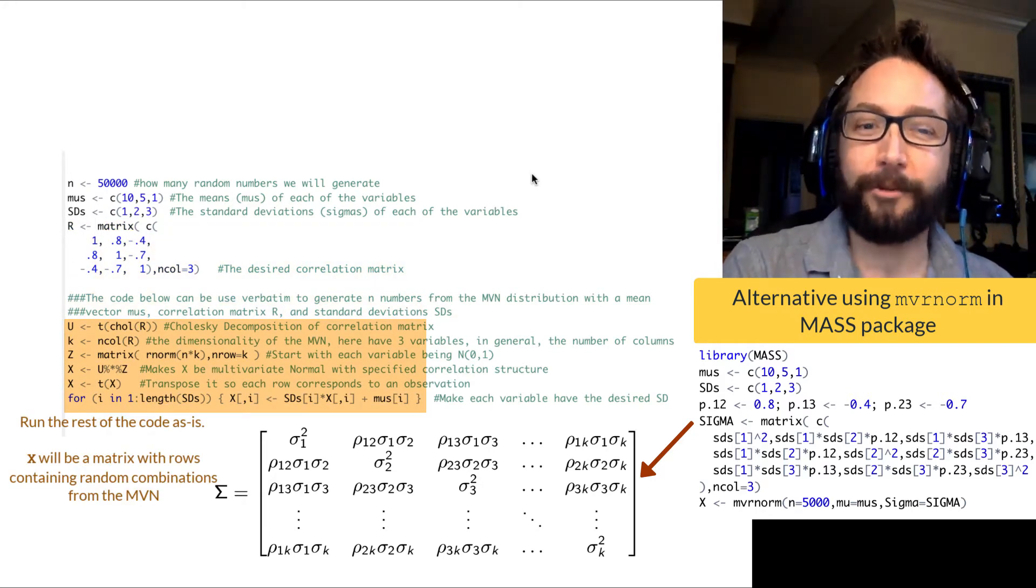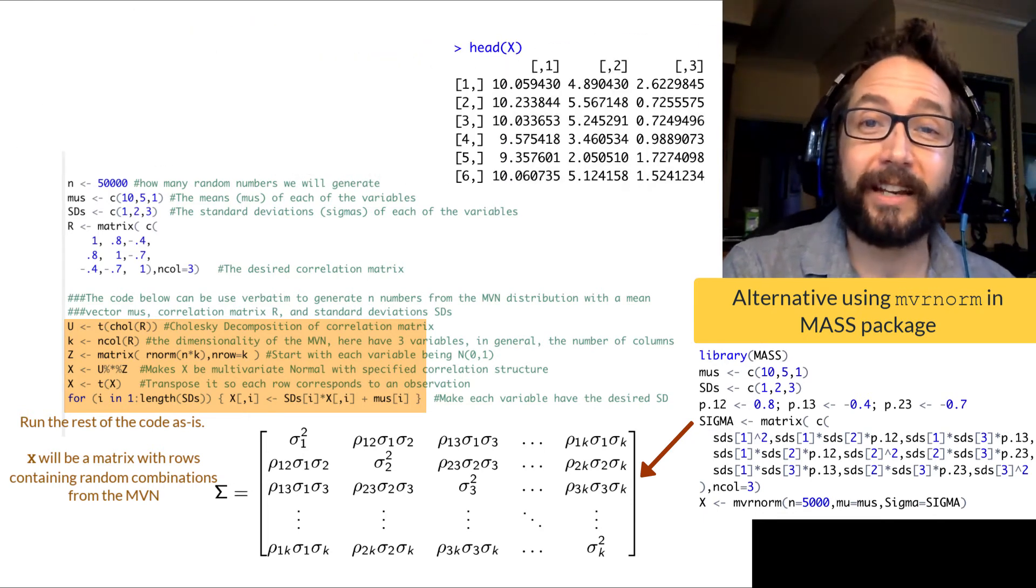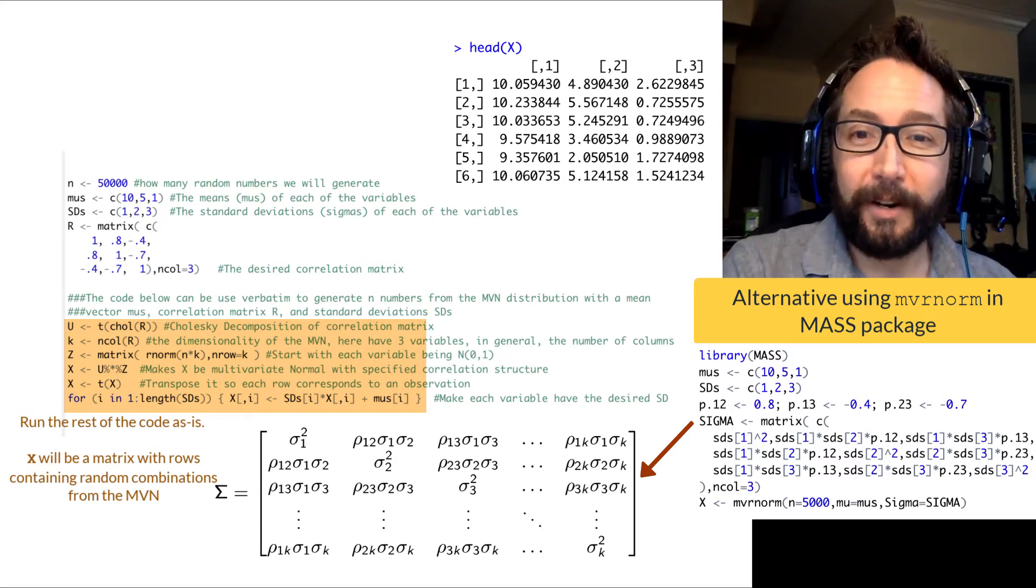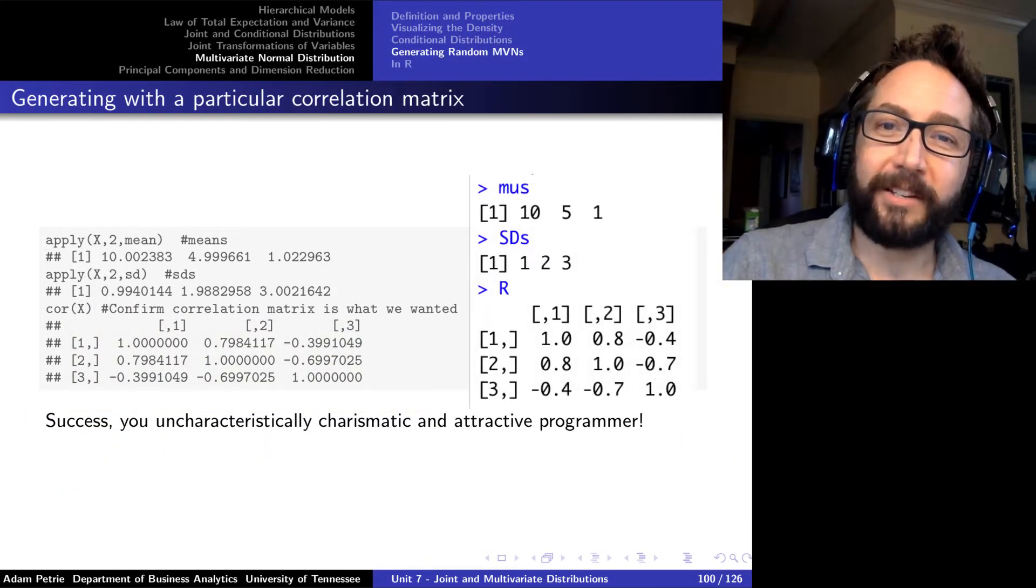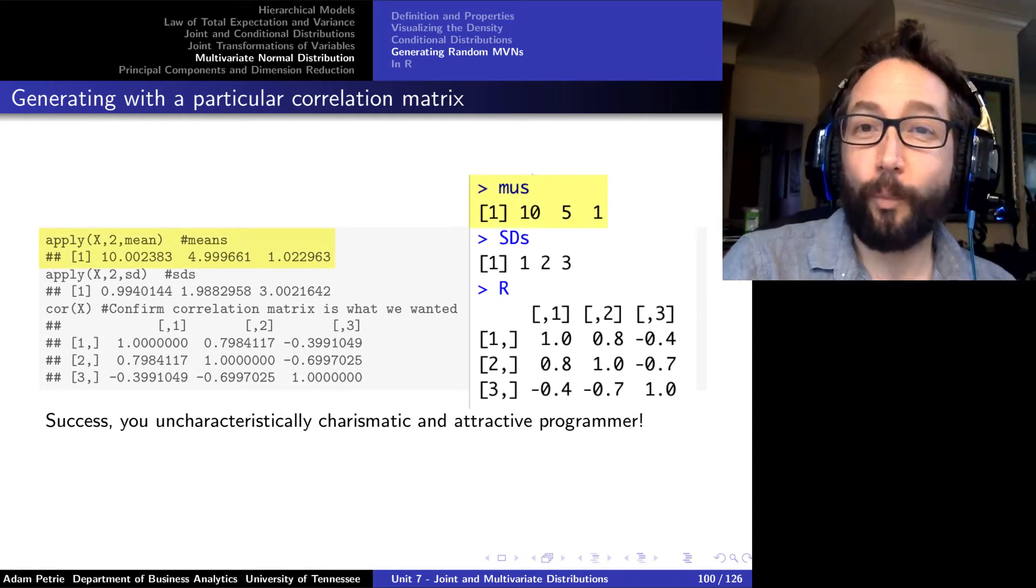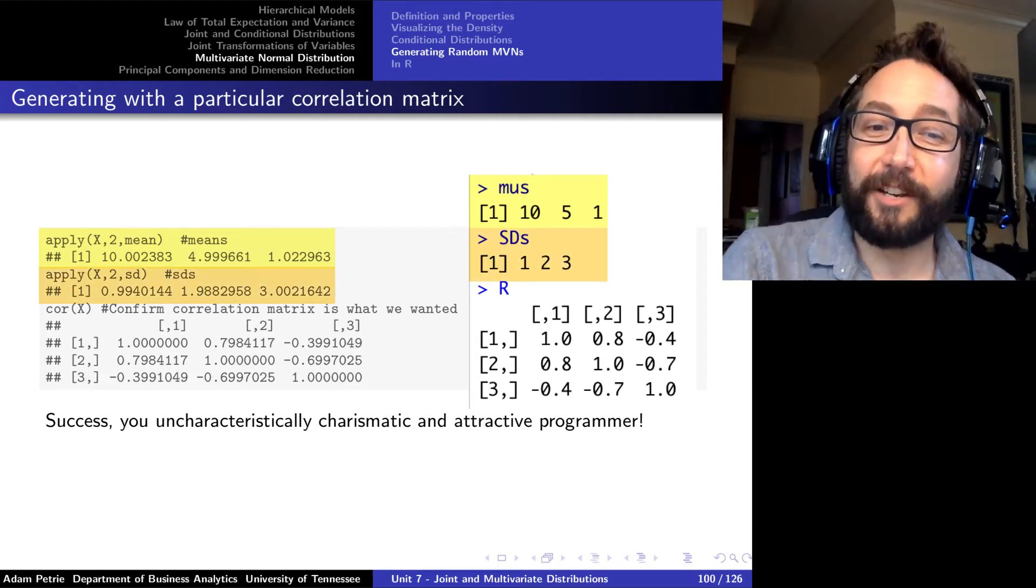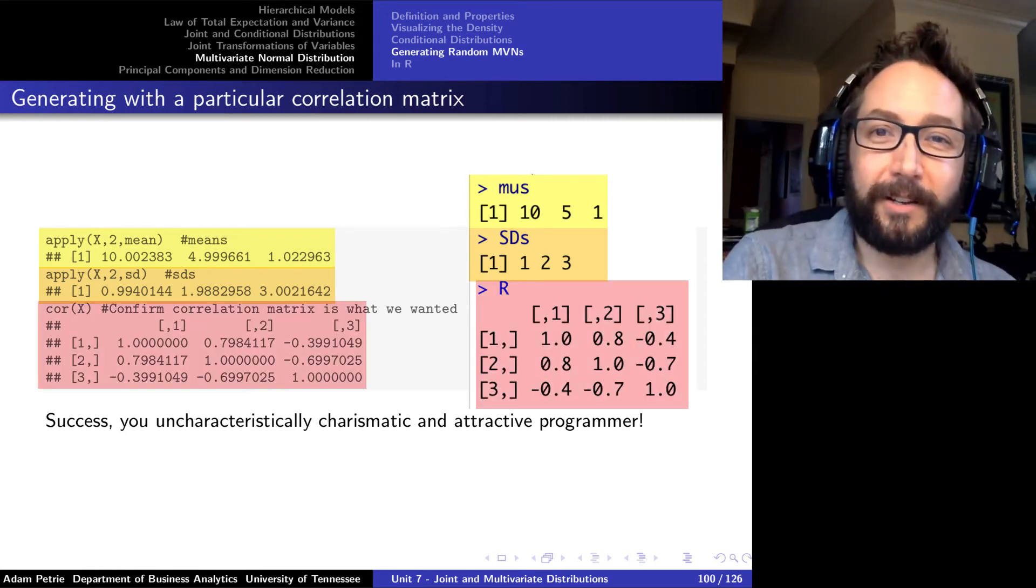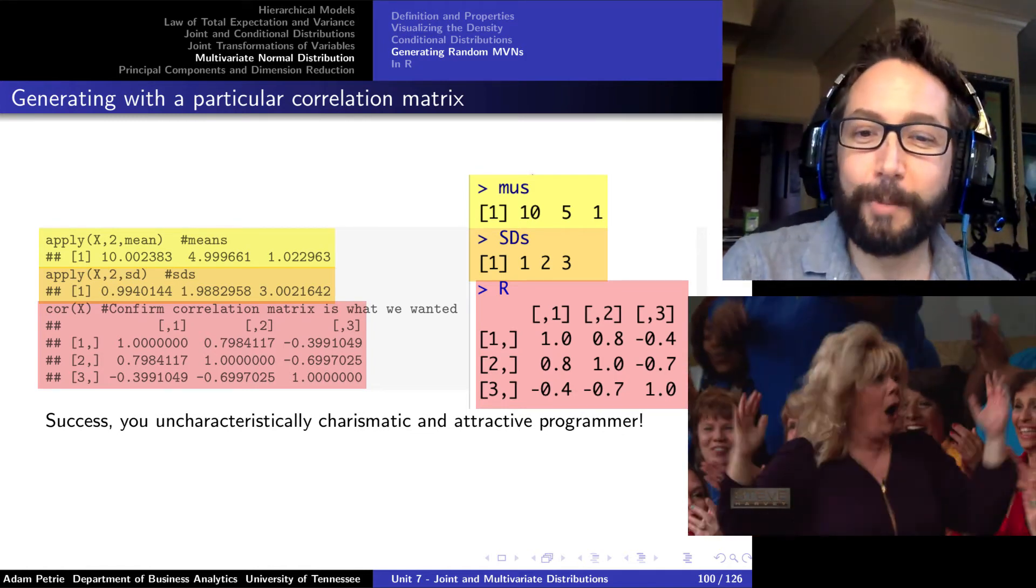And then what happens is that the vector, the matrix x that gets created and populated will be random combinations of values from that multivariate normal distribution. So in this example, I tried to create a multivariate normal that had averages of 10, 5, and 1 for x1, x2, and x3. I see my random numbers have that property, has standard deviations of 1, 2, and 3 as well as desired. And the correlation matrix of the random numbers, random combinations that I've generated match up with my design as well. So it's really not too bad of a process.